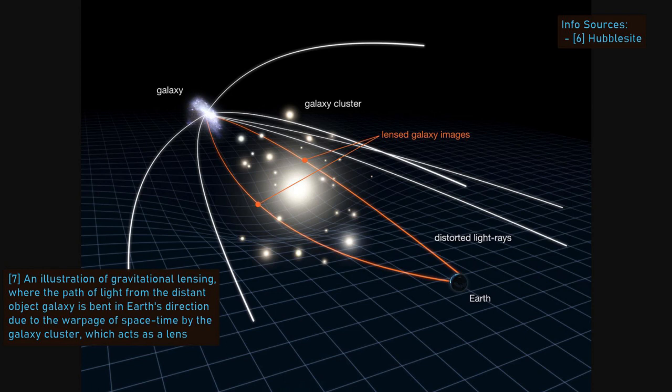Given the smaller distances between objects, and the greater relative velocities between them, microlensing events are over far quicker than in gravitational lensing, with most microlensing events lasting only a few days or weeks.